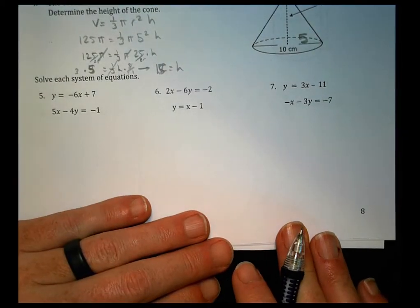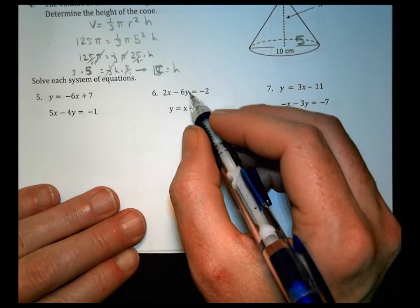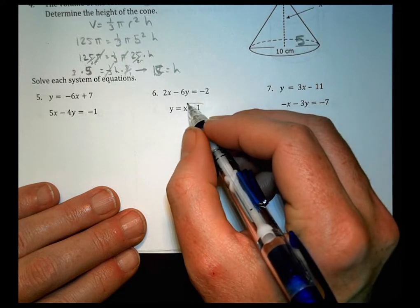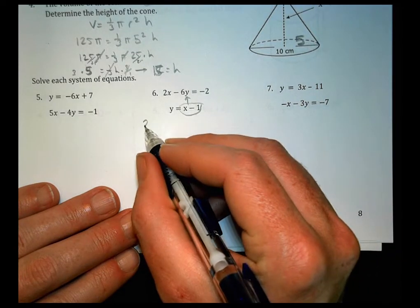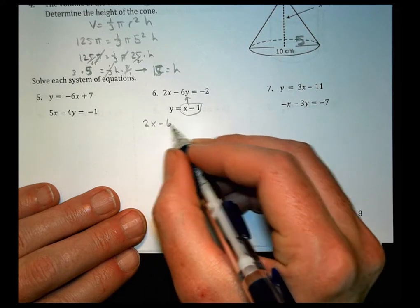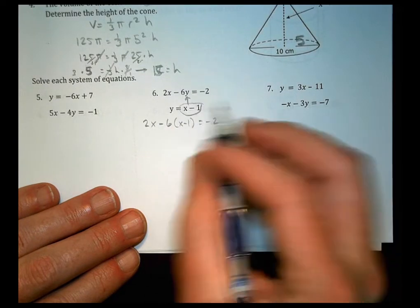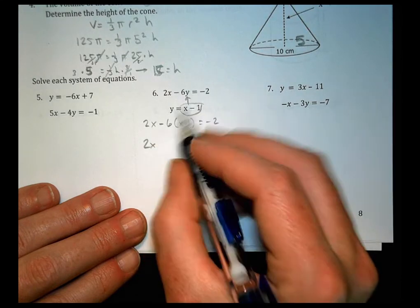Okay, systems of equations, 5, 6, and 7 once again. We've done lots of these here the last few days. So let's substitute some stuff in. We're going to put the x minus 1 in that spot right there and solve for x. We have 2x minus 6 times x minus 1 equals minus 2.